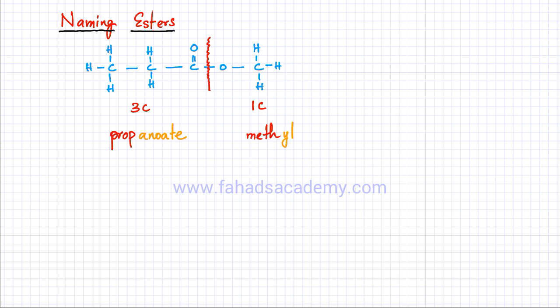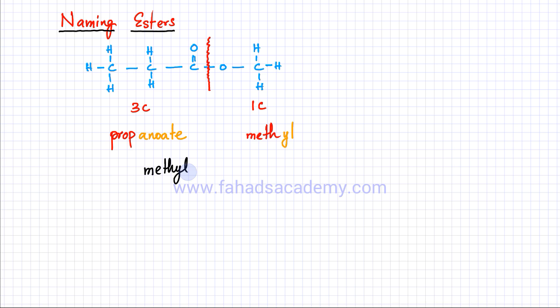So it's going to become 'propanoate,' and the final name of this molecule — you rearrange it so the alkyl '-yl' side is written first — is going to be 'methyl propanoate.'